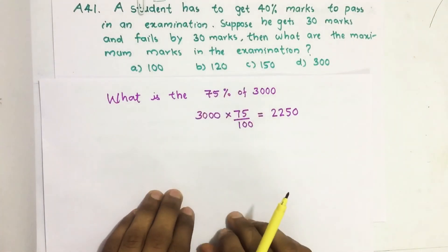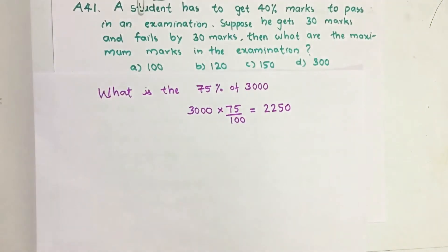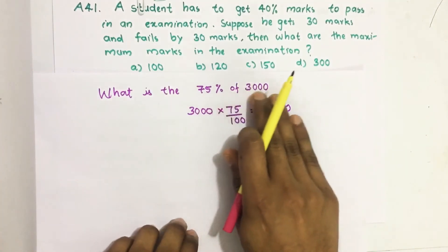So before solving this example let us see what is percentage, how we find percentage. For that I took here a simple example. What is the 75 percentage of 3000?